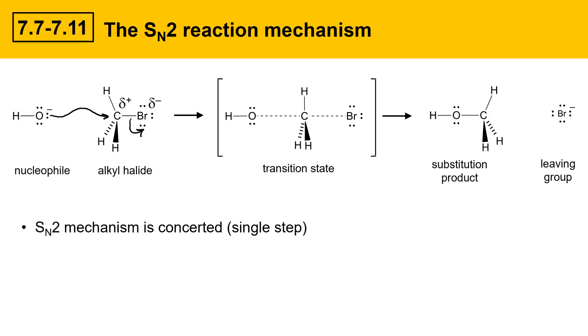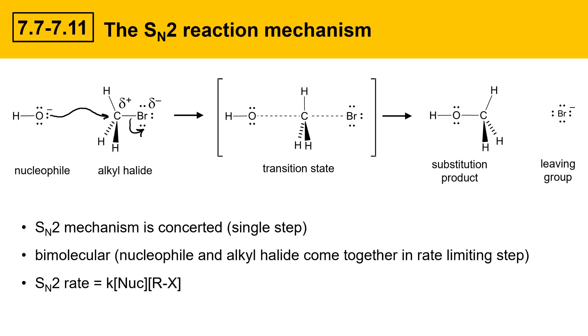The SN2 mechanism is a concerted mechanism, which means it all occurs in a single step. The reaction is bimolecular. That means that the nucleophile and the alkyl halide come together in the rate limiting step. So they need to find each other in a reaction mixture in order for the SN2 reaction to happen. The rate law for an SN2 reaction is k, that's the rate constant, times the concentration of nucleophile times the concentration of alkyl halide.